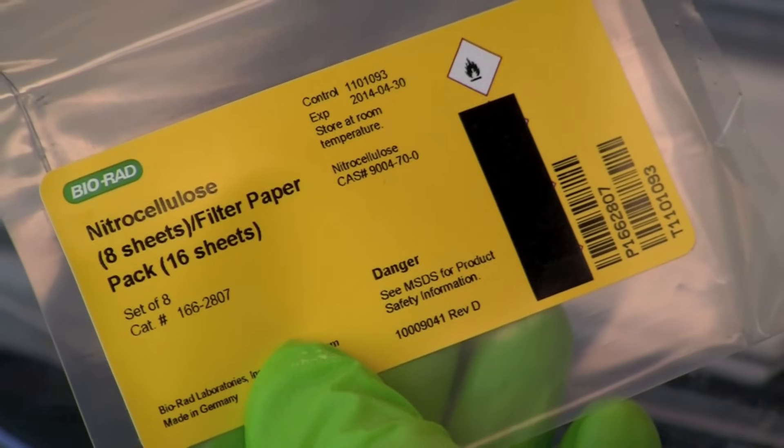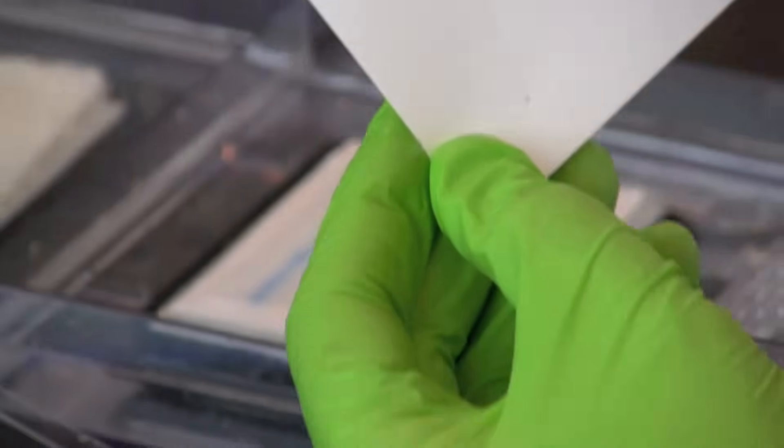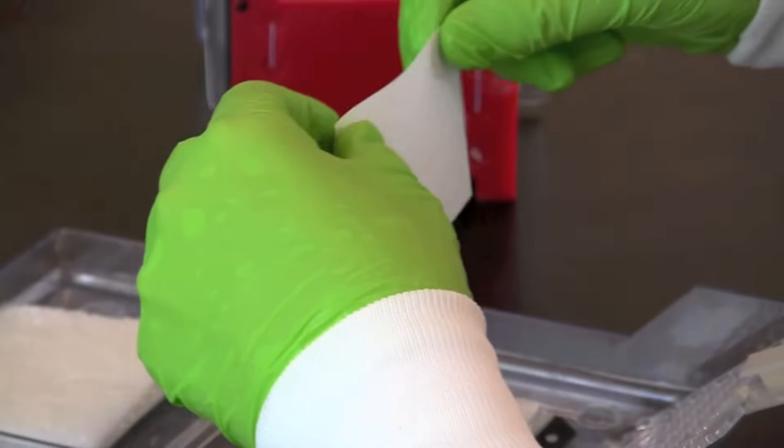Next, you will be applying a piece of nitrocellulose membrane. Remove the protective sheet from the membrane and wet the membrane with blotting buffer.